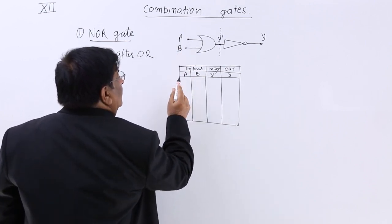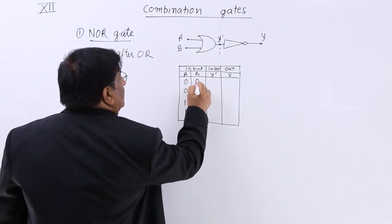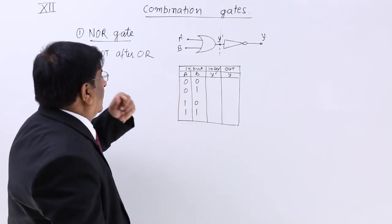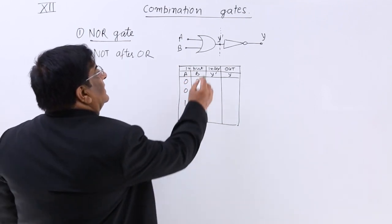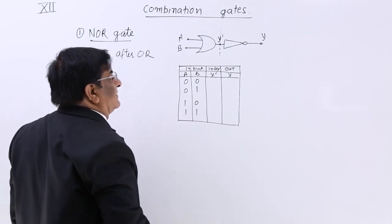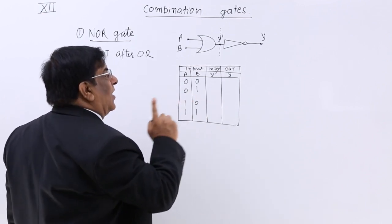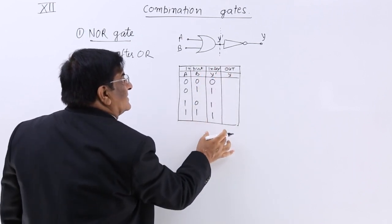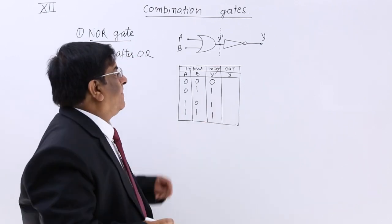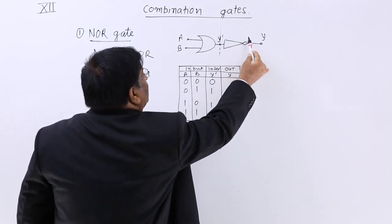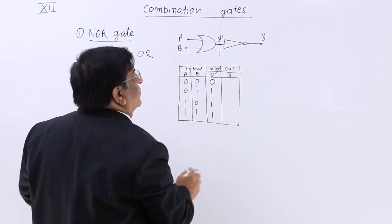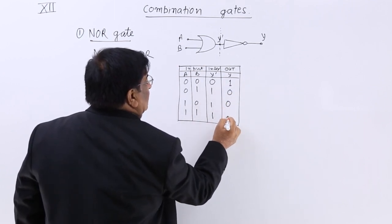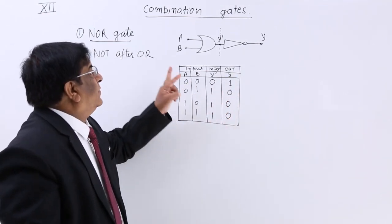We start from the input. Input A is 0, 0, 1, 1 and input B is 0, 1, 0, 1. The OR gate gives output 0, 0, 0, 1 — that is, there is no output when both inputs are 0, and the rest are 1. This is the result of the OR gate. Now the NOT gate always negates the input — when input is 0 it gives output 1, and when input is 1 it gives output 0. So this is the final output of the NOR gate.